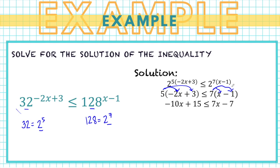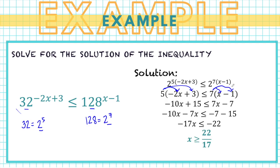Transposing 15 to the right and 7x to the left gives negative 10x minus 7x less than or equal to negative 7 minus 15, so negative 17x less than or equal to negative 22. Dividing both sides by negative 17 reverses the inequality sense, giving the solution x greater than or equal to 22 over 17.